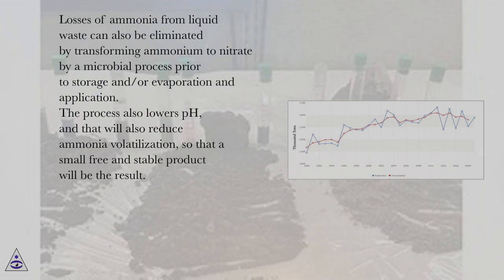Losses of ammonia from liquid waste can also be eliminated by transforming ammonium to nitrate by a microbial process prior to storage and/or evaporation and application. The process also lowers pH, and that will also reduce ammonia volatilization, so that a small free and stable product will be the result.